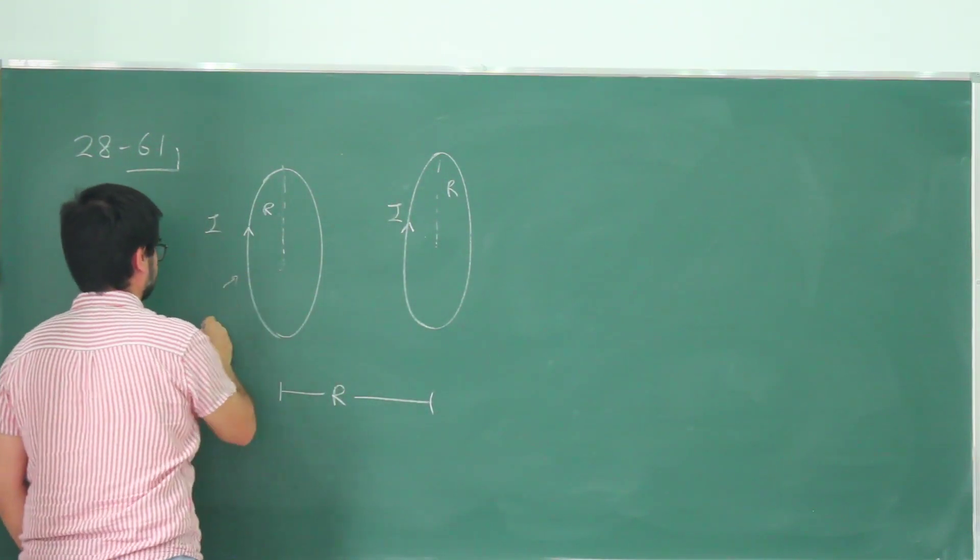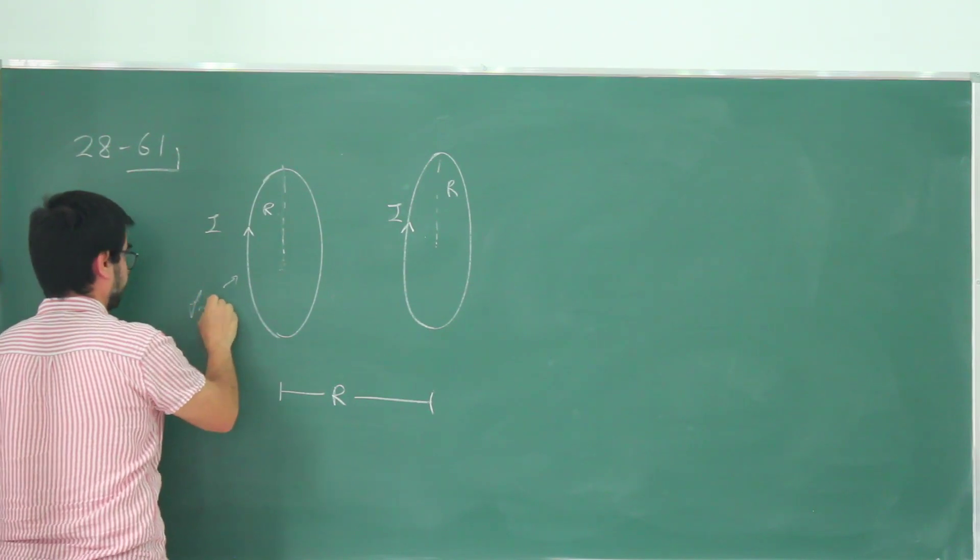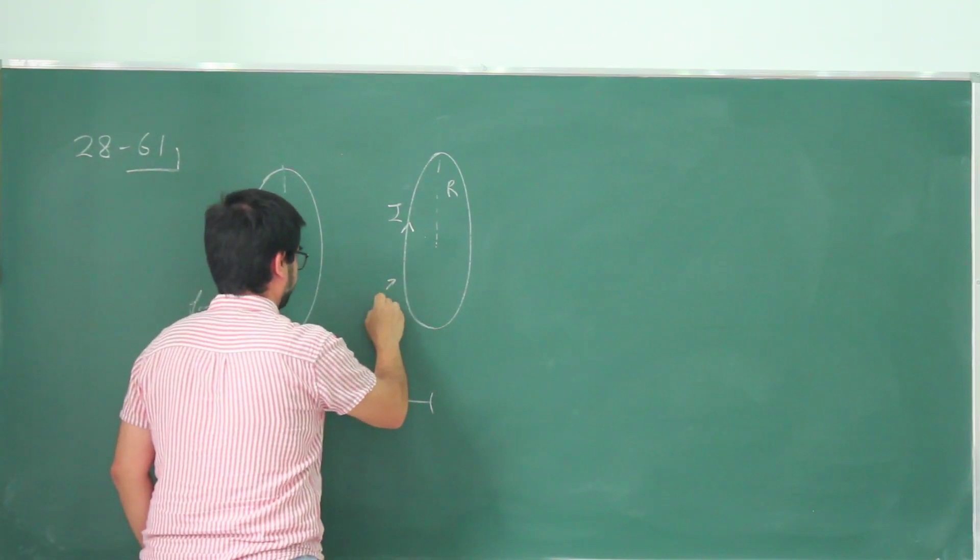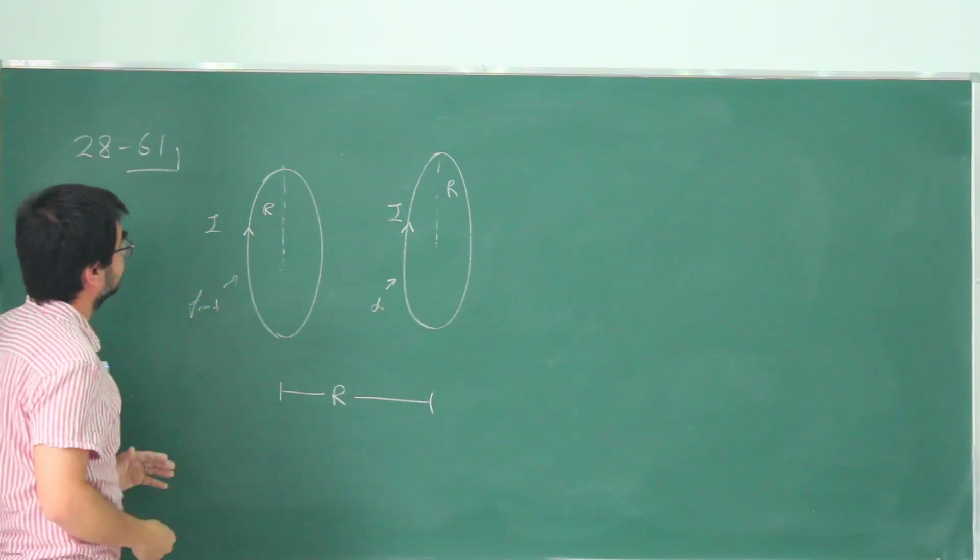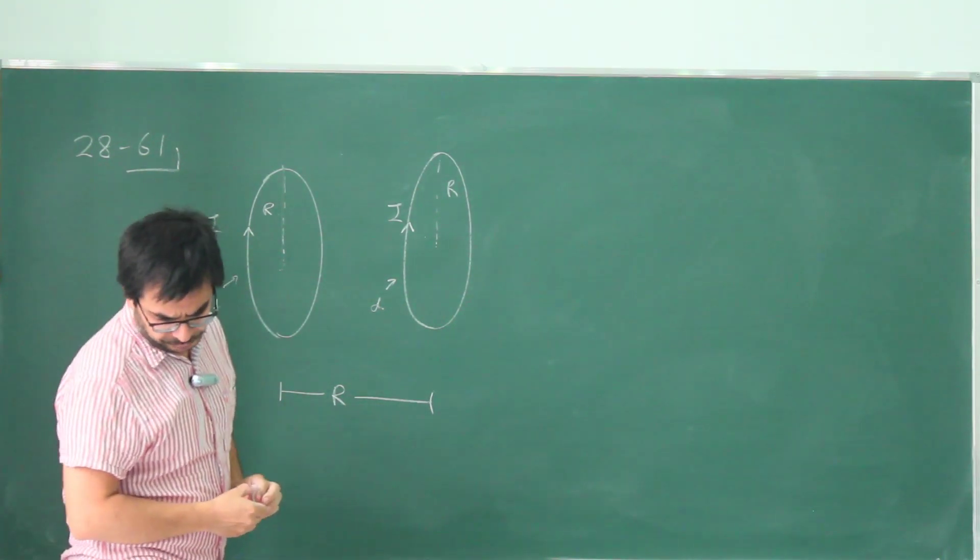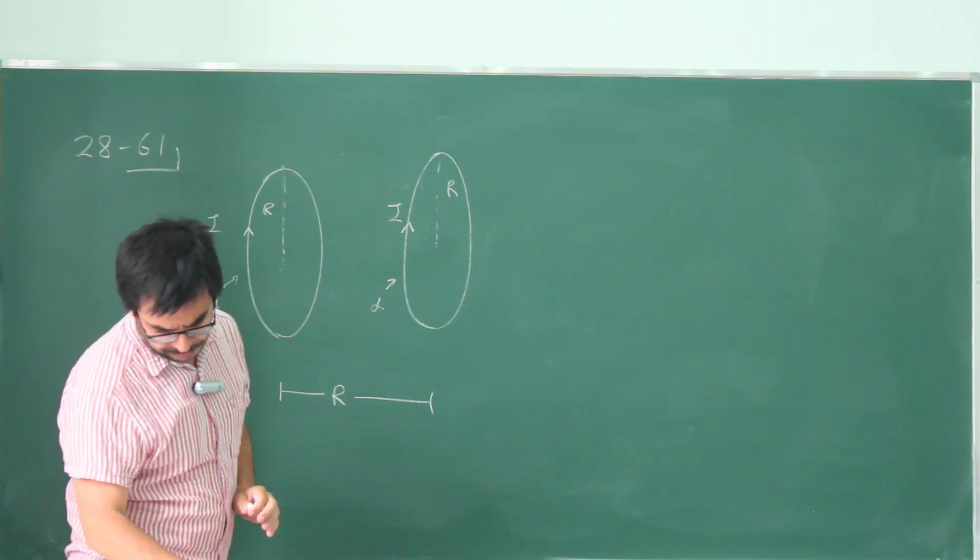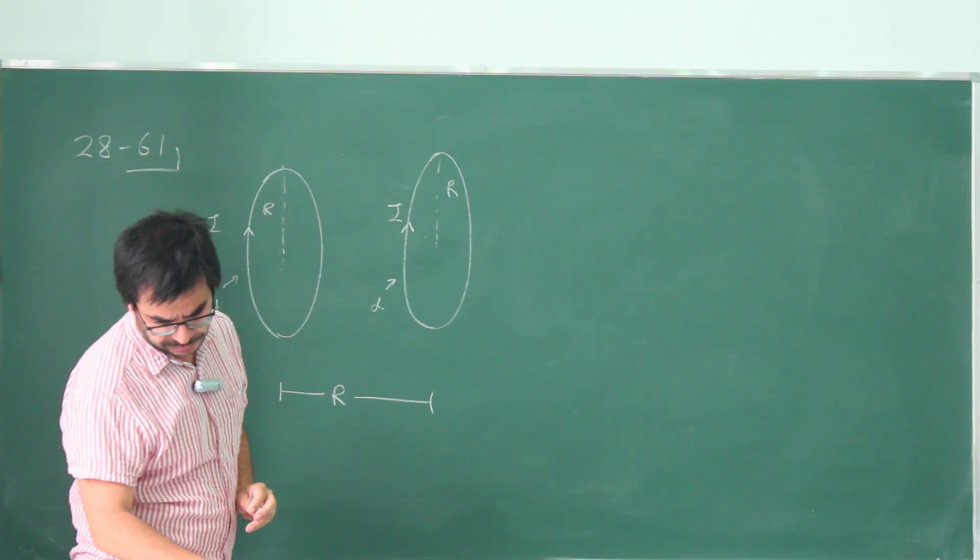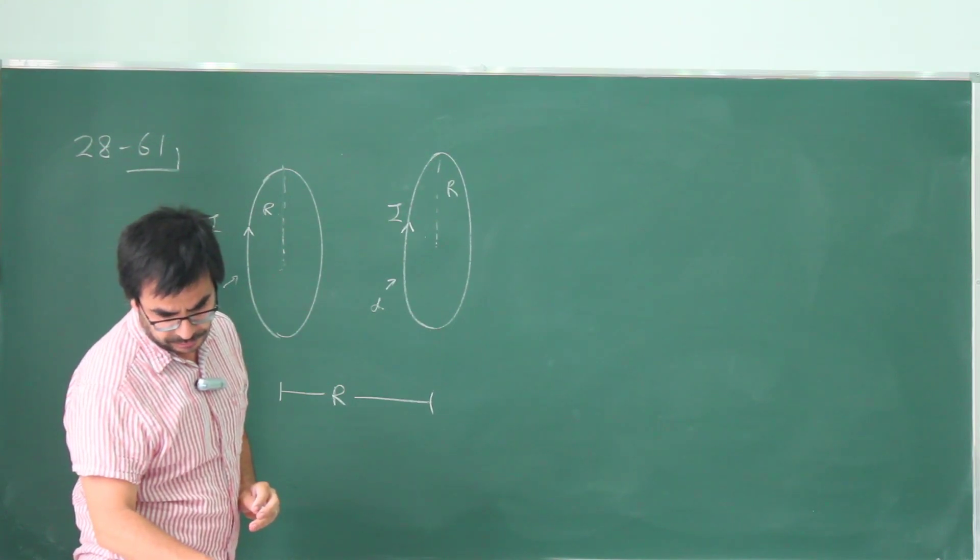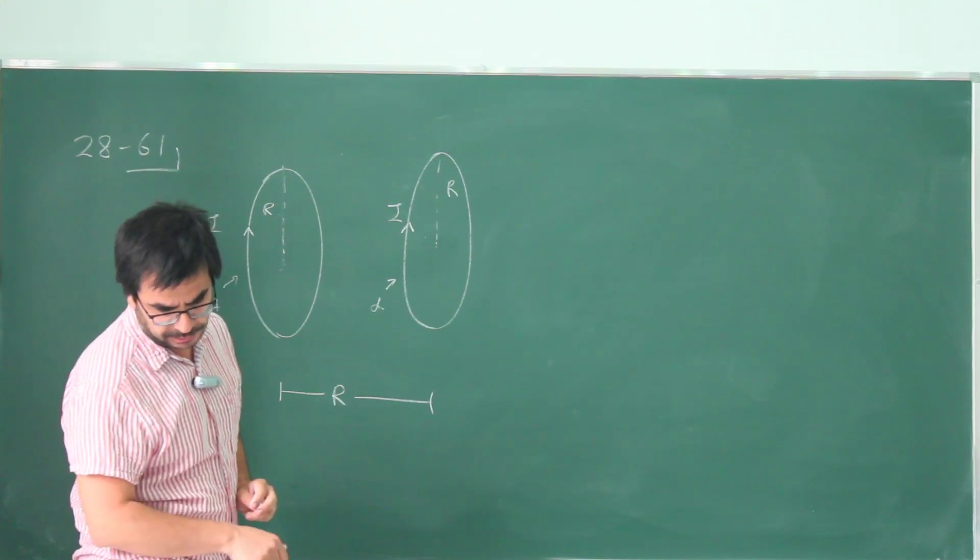And this part in my drawing is the front. So the currents are like this. They are going this way. So we are required to find the magnetic field B at points x along the line joining their centers, where x equals 0 at the center of one coil and x equals R at the center of the other.